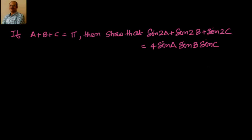This transformation is from sum to product — that's what we have to prove. We have been given trigonometric ratios in addition form, and we have to prove that they equal the product of sin a, sin b, sin c.